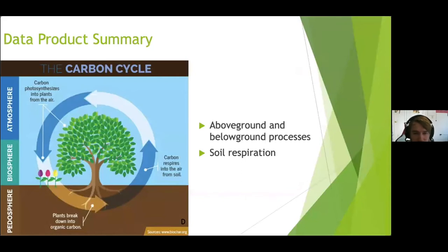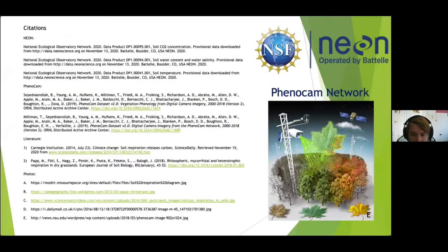This data product will provide a tool for researchers to get an initial look at how seasonal patterns for above-ground and below-ground processes align. This will allow inference into which ecosystems have the strongest signals and at what time of year the most significant changes occur. Ultimately, this data product can be expanded using the gradient method to model soil CO2 movement throughout the soil profile and determine seasonal soil respiration rate in relation to changes in photosynthetic activity. I'd like to thank NEON and the PhenoCam Network for making their data freely available.